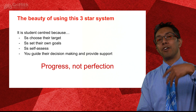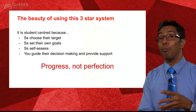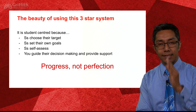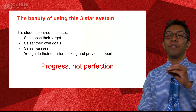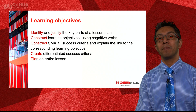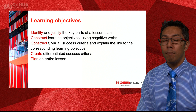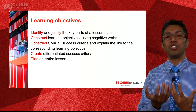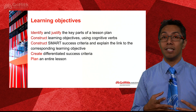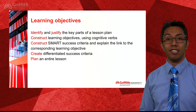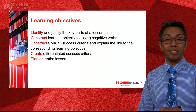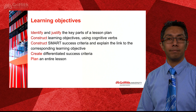That's a nice review of how the three-star system is absolutely student-centered: students choose their targets, set their own goals, self-assess, and at the end decide whether they've achieved one-star, two-star, or three-star. Here are the learning objectives again — a reminder that this lecture is really the culmination of earlier lectures on cognitive verbs, collaborative learning strategies, and assessment. I highly recommend going back to watch those if you haven't already summarized or reviewed them. Thank you.